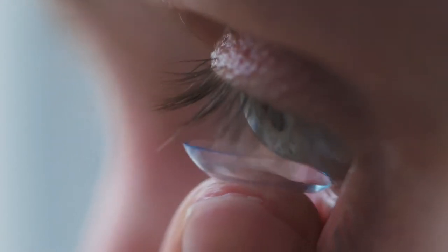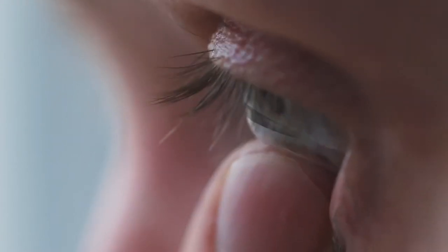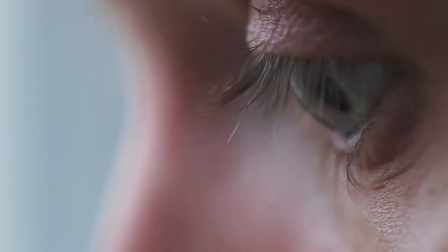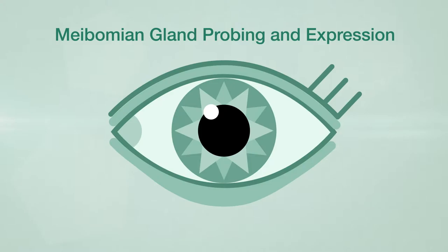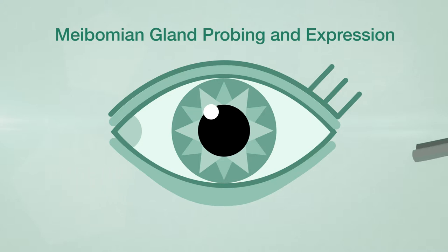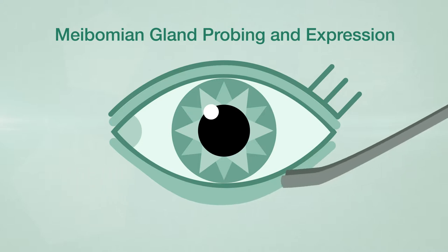Scleral contact lenses: specialized contact lenses that bathe the surface of the eye in fluid to keep it lubricated and simultaneously correct vision. Meibomian gland probing and expression: this treatment is required when meibomian glands are obstructed or blocked. The openings to the glands become blocked and can be gently opened using a small probe.